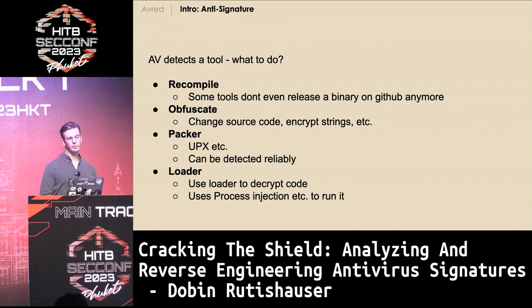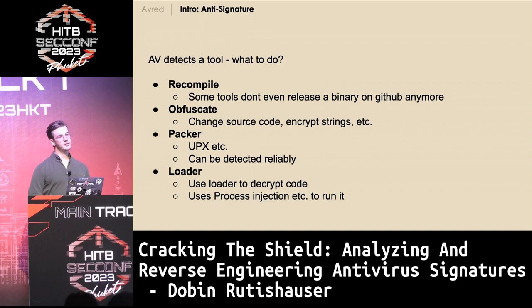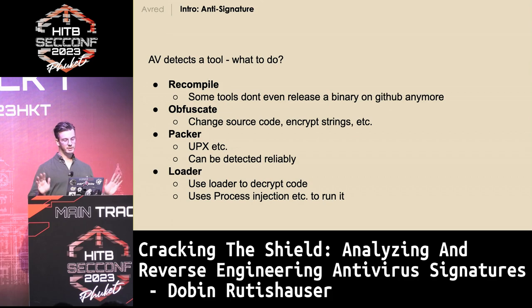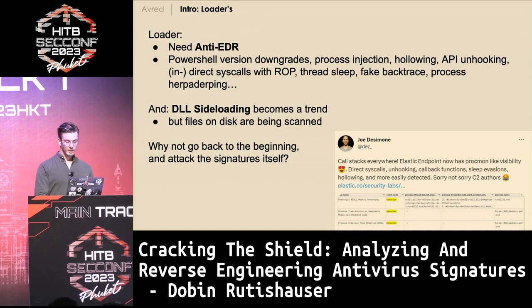So what if you have a file, some tool you want to deploy, but the antivirus is complaining? You have different options. For one, you can try to recompile the tool — nowadays most red teaming tools don't even have a binary release on GitHub anymore, you have to compile it yourself. You can try to use an obfuscator to obfuscate the code, the data, and whatever. You can use a packer like UPX, but this is easily identifiable. And nowadays more modern are loaders, where you have an encrypted shellcode or executable and a loader to decrypt and execute it.